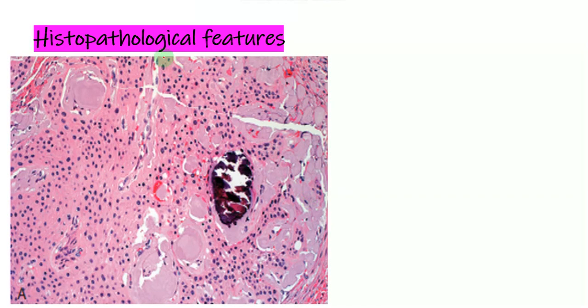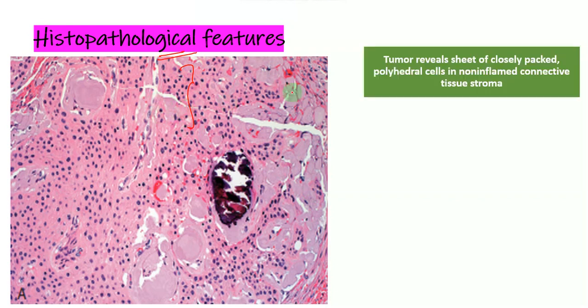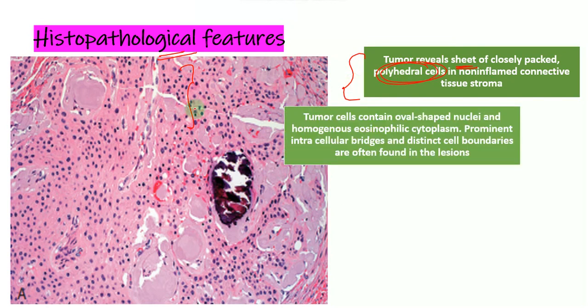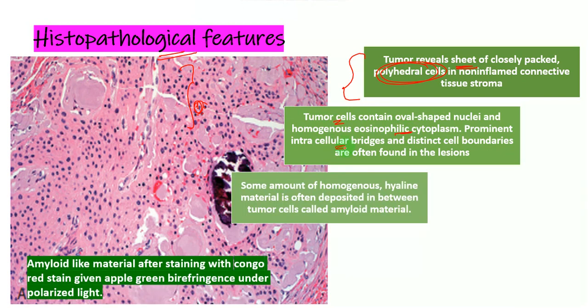Going into the histopathology, first I'll show you the real section. Then to make it easier, we'll go into the diagram. The most prominent thing here is sheets or islands or strands of polyhedral cells which have an oval nuclei and an eosinophilic cytoplasm. There are prominent intracellular bridges.